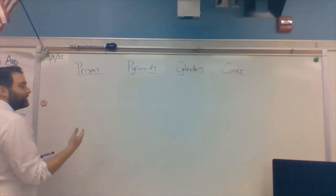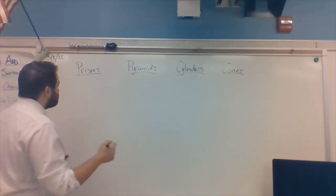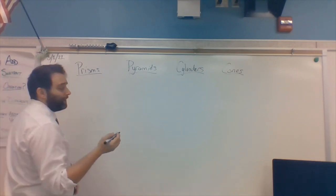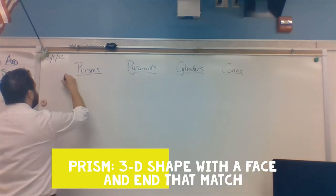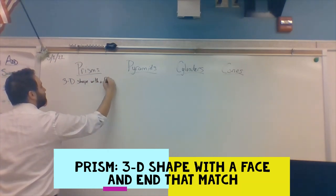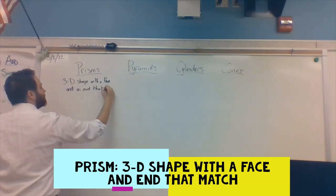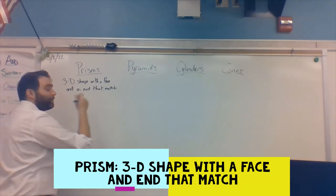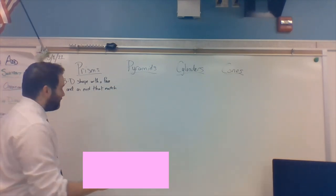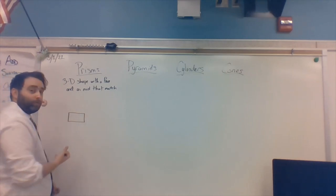So, let's go over what these shapes are. Prism. Now, if you've heard it in science, prism is kind of that thing that bends light. It's not incorrect. But a prism, mathematically, is a 3D shape with a face and an end that match. Now, what do I mean? Relax. I'll get there.